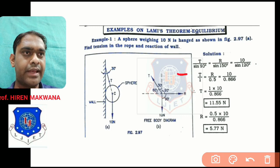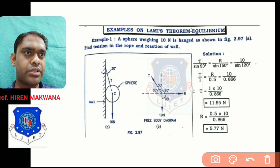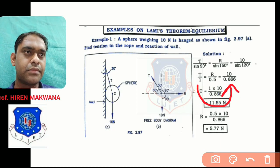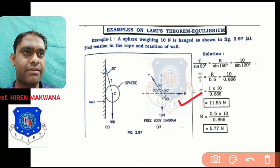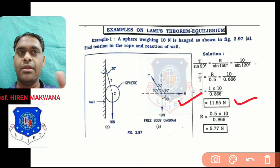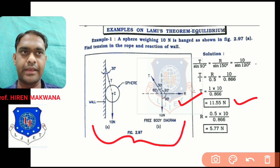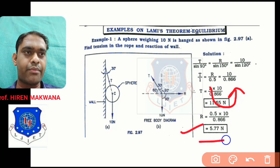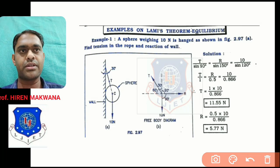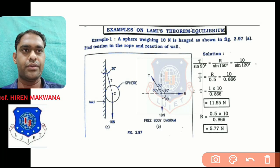sin 90 equals 1, sin 150 equals 0.5, sin 120 equals 0.866. These are the three pairs. Comparing the first term with the last term gives tension T equal to 11.55 Newton. Comparing R with the last term gives R equal to 5.77 Newton. The calculation is very easy — the most important thing is getting the figure and angles right. T is 11.55 Newton and reaction R is 5.77 Newton.